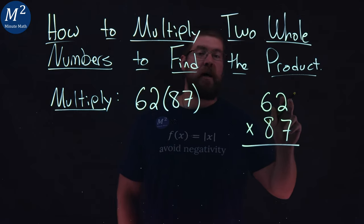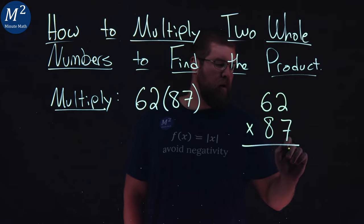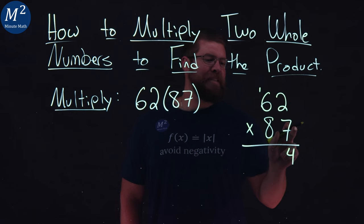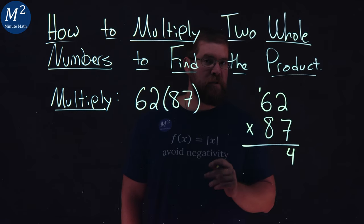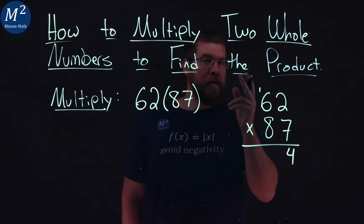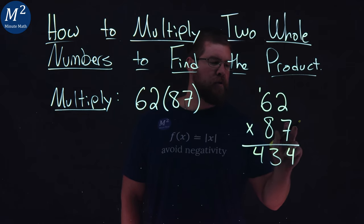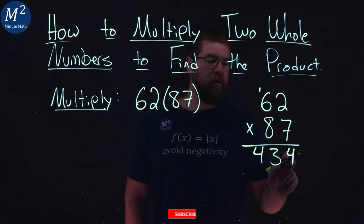I first start with seven times two. Seven times two is 14. Four comes down here and I carry the one. I then multiply seven times six which is 42. We add one to that and we get 43 and we just put that down here. So right now seven times 62 is 434.